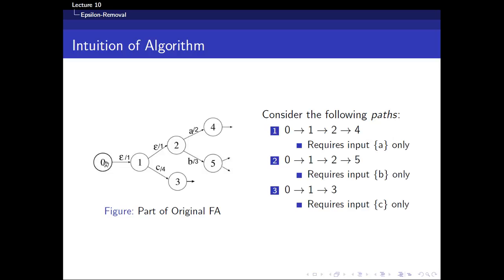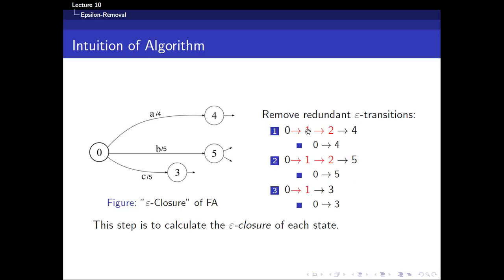You can see easily that if I take path 0, 1, 2, 4, I just need A as an input. If I take path 0, 1, 2, 5, I just require B as an input. And path 0, 1, 3 — I just need C as an input. So what do we do? We can throw away the intermediate states 1 and 2 that have the Epsilon transitions, and then merge the starting node and ending destination state — connecting 0 to 4, 0 to 5 — and claim that these new transitions require A, B, or C as inputs respectively.